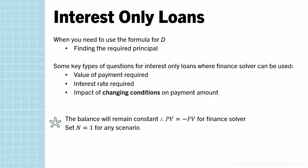Often you'll see an interest only scenario as part of a bigger question where perhaps the first half of the loan is a reducing balance. Key things to remember when using Finance Solver: the balance remains constant so your PV and FV are the same number but with different signs — money into the bank is negative, money from the bank is positive. You can set N as 1, although using 30 or 100 payments won't alter the outcome.